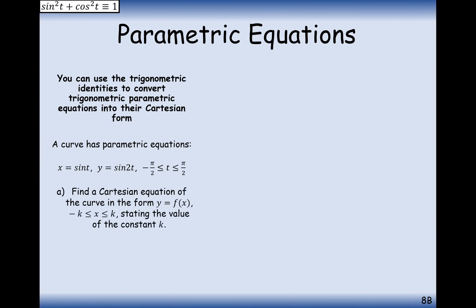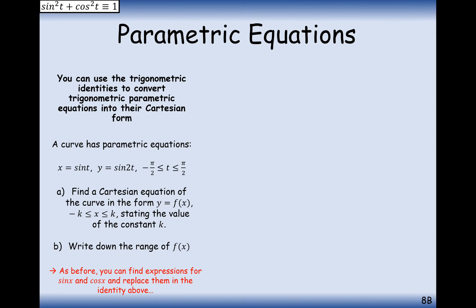Another equation: a curve has parametric equations x = sin(t), y = sin(2t). Question A asks us to find a Cartesian equation of the curve y = f(x), where the domain is between −k and k, stating the value of the constant k. We'll work that out towards the end. As before, you can find expressions for sin and cos and replace them into the identities. In this case, the first thing to do is play around with y = sin(2t) and use the double angle formula.